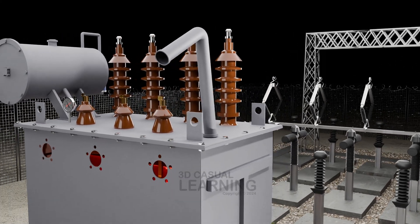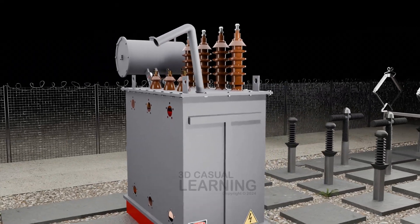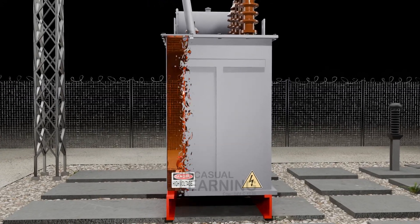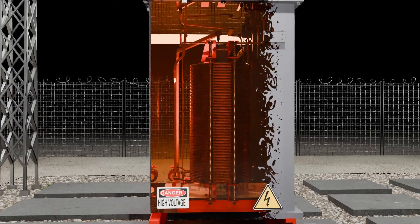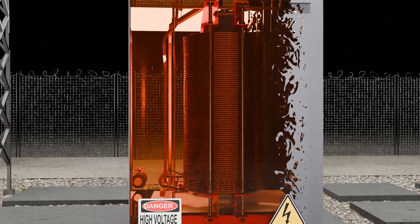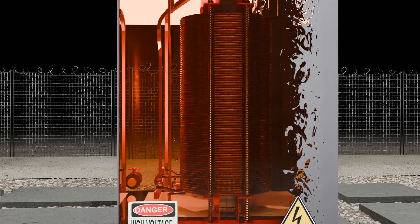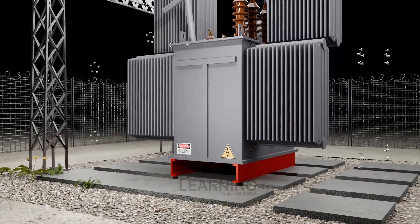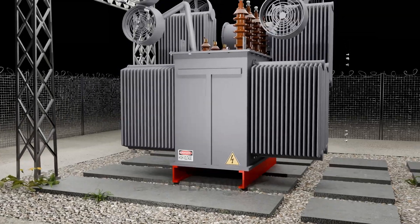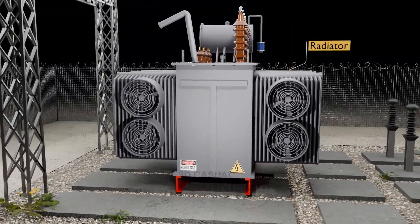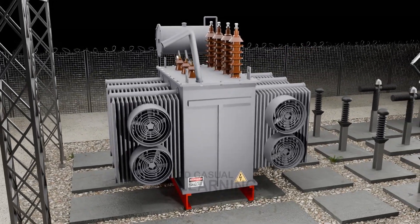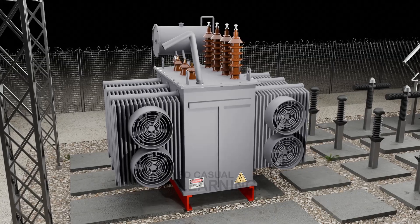Transformers generate heat due to electrical losses and magnetic flux during normal operation. This heat must be dissipated to prevent overheating, which can lead to insulation degradation and reduce transformer lifespan. The radiator facilitates the transfer of heat from the transformer oil to the surrounding air and is typically part of the transformer's cooling system, which may also include fans or natural convection. As the heated transformer oil flows through the radiator tubes or fins, it transfers heat to the metal surfaces, which in turn transfers it to the surrounding air, lowering the temperature of the transformer oil and internal components.